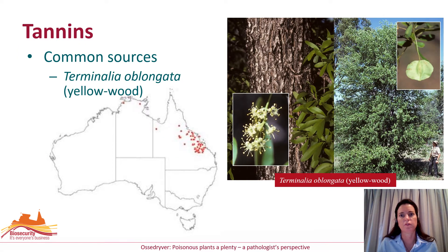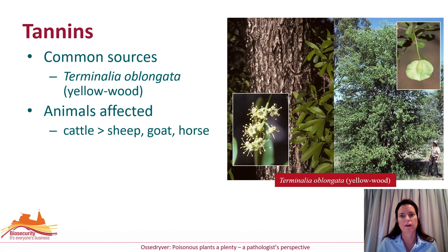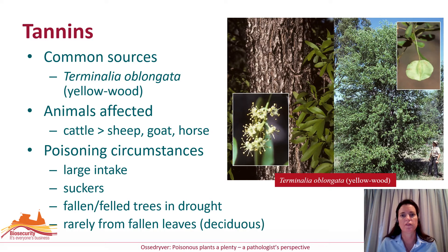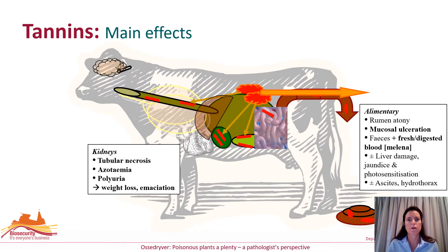Livestock poisonings due to hydrolysable tannins present in yellow wood are restricted to its geographical location in central Queensland. Cattle are most commonly affected, although other livestock species are considered susceptible. Large intakes of hydrolysable tannins are required before poisoning occurs and root suckers or fallen trees are the likely culprits. The common site of primary damage is the kidneys, with secondary effects seen in the gastrointestinal tract. Affected animals will lose appetite, become dehydrated and gradually lose weight, pass large volumes of urine and may have diarrhoea. Blood may be observed in both urine and faeces, and animals may accumulate fluid causing ascites, hydrothorax or oedema of the perineum and brisket. In the early stages of poisoning, the liver may be affected and animals may be jaundiced or have photosensitisation.